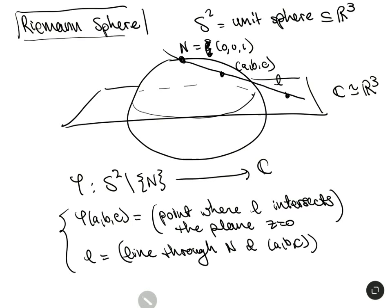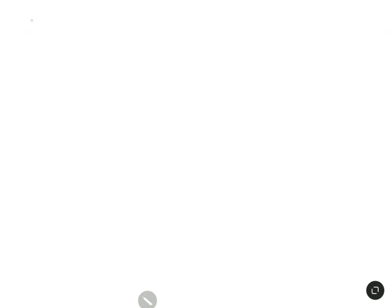Notice that the south pole — if we draw this line — corresponds to the point (0, 0, 0), or in the complex plane just the point 0. An exercise would be to show that φ(a, b, c) = (a + bi) / (1 − c).